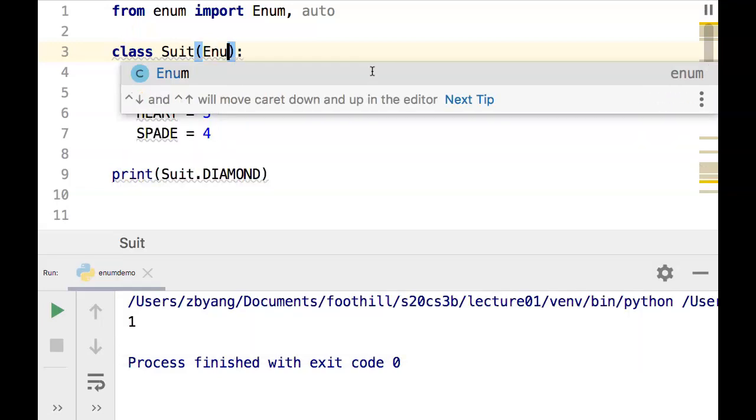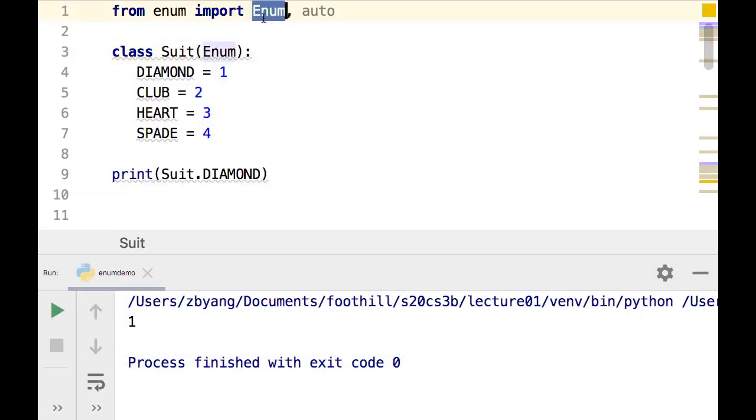Now we haven't talked about inheritance yet - we'll talk about inheritance later. But for now, we can just basically say that suit is a type of enum, and inheriting from Enum greatly expanded the capability of suit.